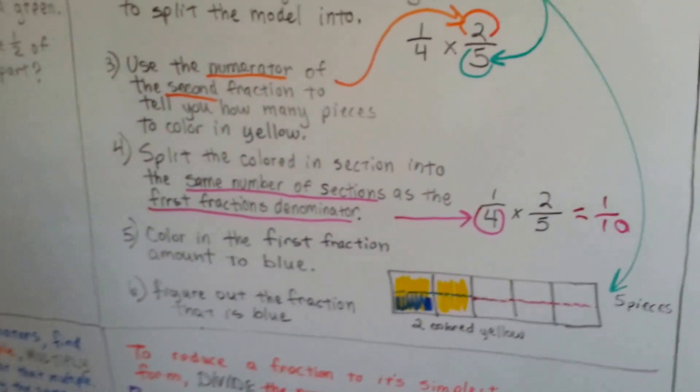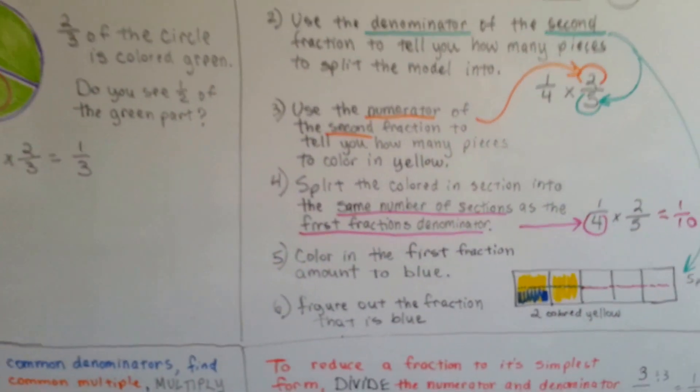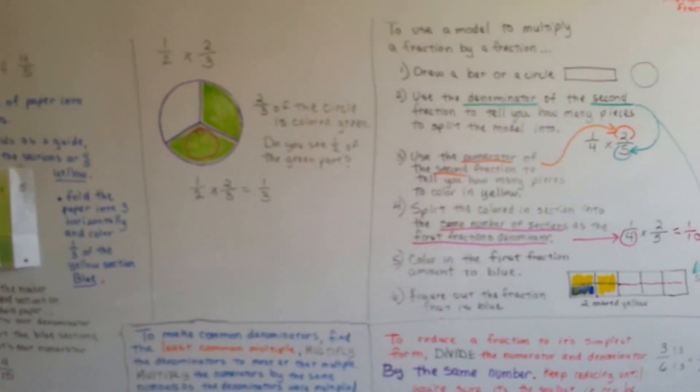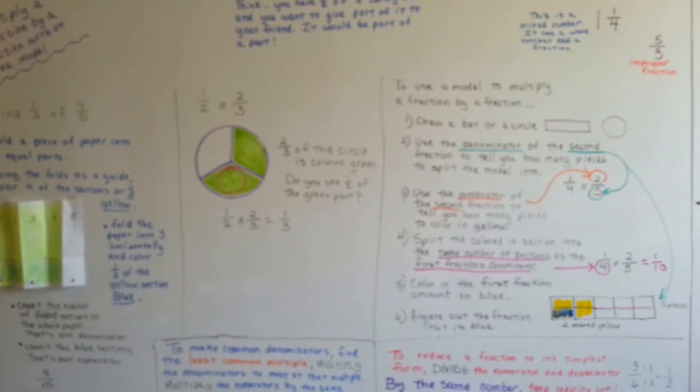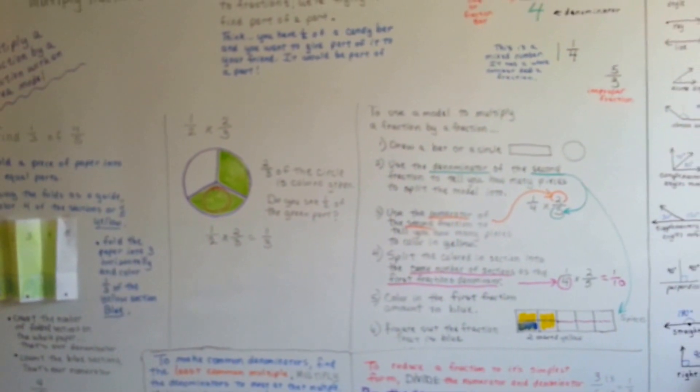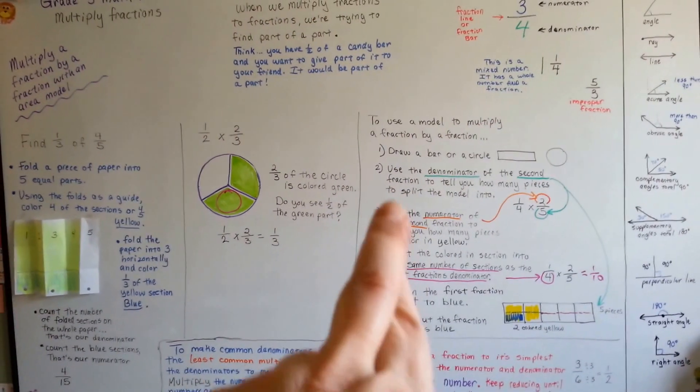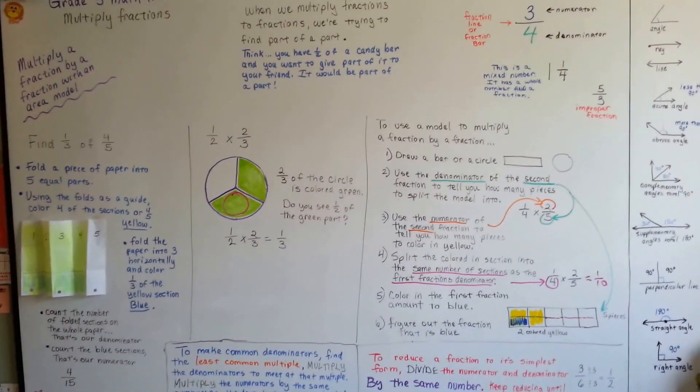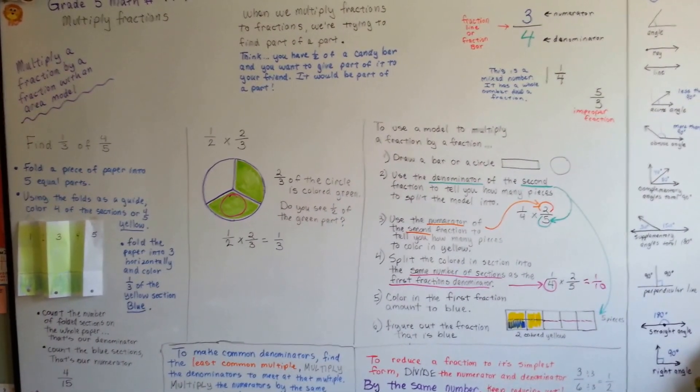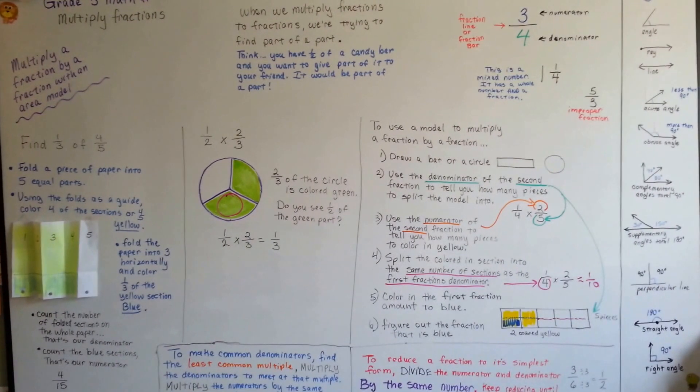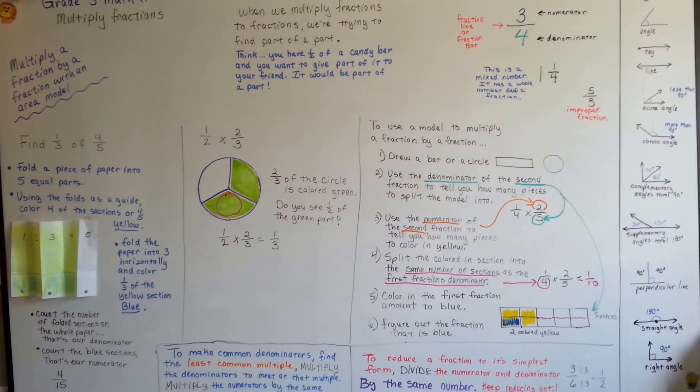So we can use area models to help us find the products when we multiply a fraction by a fraction. That wasn't that hard, was it? So what you can do is write this down or try to remember it so that when you do it yourself, you can remember how to make them. I'll see you next video. Bye!